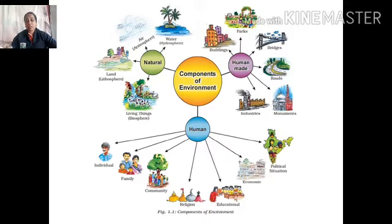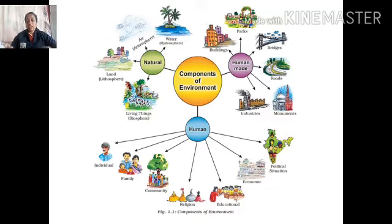The basic life support system includes air, water, food, and land. All living things need air. We need water for day-to-day life, and all living things need water. We need food to survive, and we need land to live. These are the main components. Air, water, and land are the natural gifts among the components.